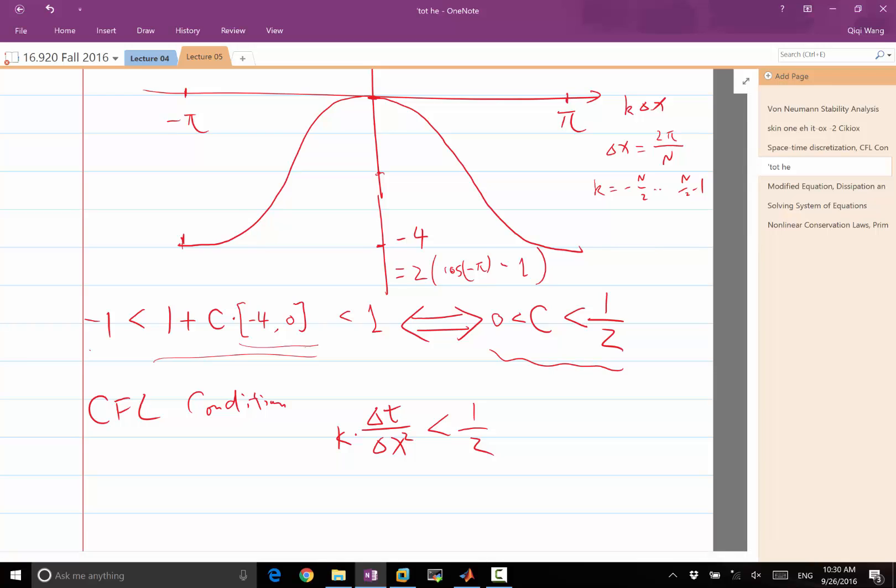The error is going to linearly amplify because whatever error you have previously, you have the same amount of error in your next iteration plus the additional contribution of the error from the truncation. So that means the worst case scenario in the growth of the error is going to be linear.